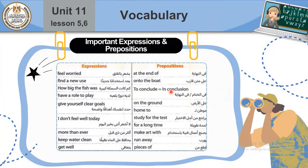Expressions and prepositions: Feel worried — يشعر بالقلق. Find a new use — يجد استخداماً جديداً. How big the fish was — كم كانت السمكة كبيرة. Have a role to play — لديه دور يلعبه. Give yourself clear goals — حدد لنفسك أهداف واضحة. I don't feel well today — لا أشعر إنني بخير اليوم. More than ever — أكثر من أي وقت مضى. Keep water clean — يحافظ على الماء نظيفاً. Get well — يتعافى. In conclusion / To conclude — في الختام. On the ground — على الأرض. Home to — موطن لـ. For a long time — لمدة طويلة. Make art with — يصنع أعمالاً فنية. Run away — يهرب. Pieces of — كتع من.